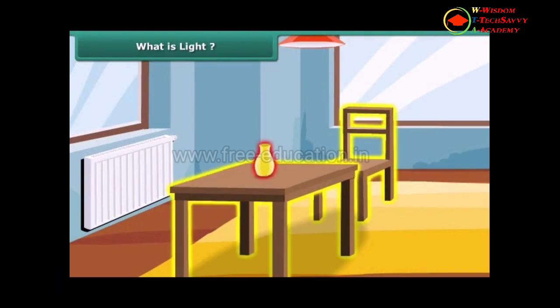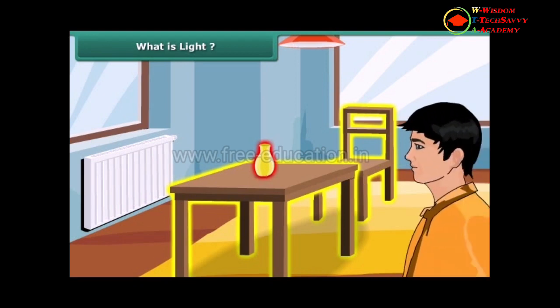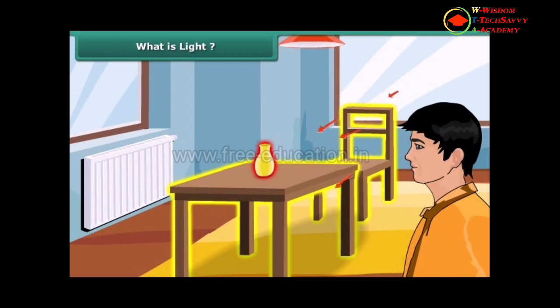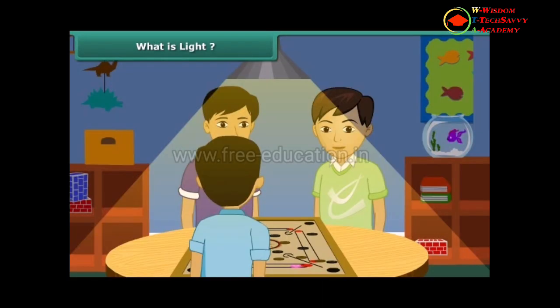You look at different things in this room — you can see the chair, table, and the beautiful vase on the table. Things are visible to us only when the light from the object enters our eyes. This occurs in two ways: either the object itself emits light, or it reflects the light falling on it from another light source. Hence, in complete darkness, due to the absence of light, we cannot see anything.